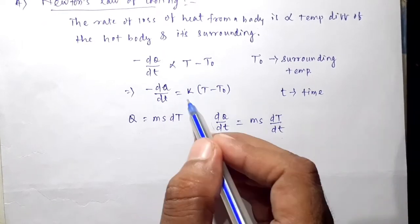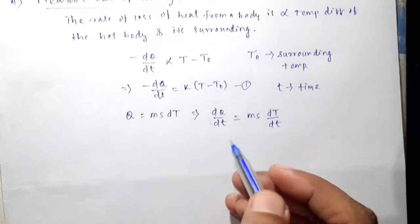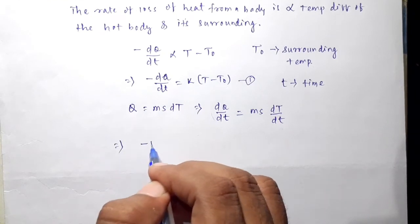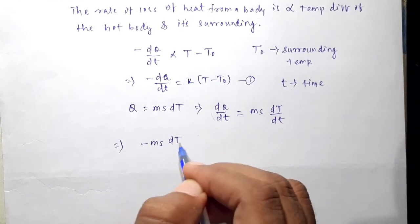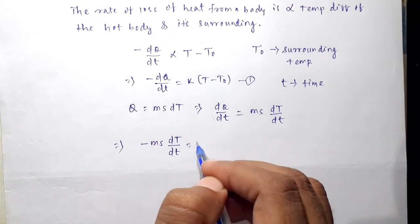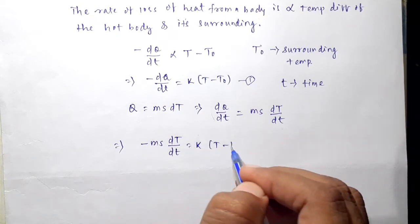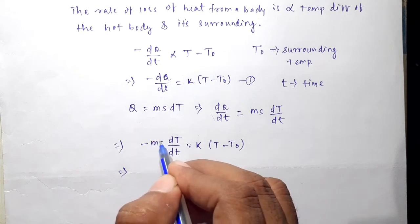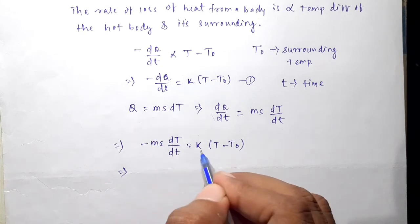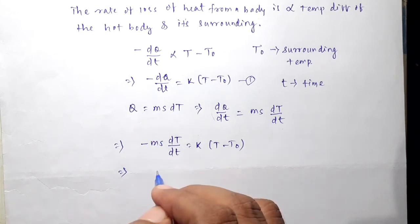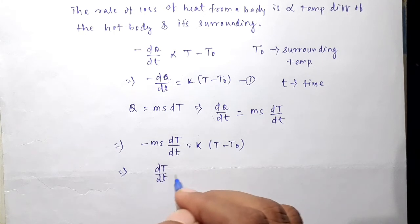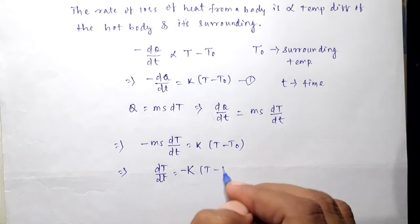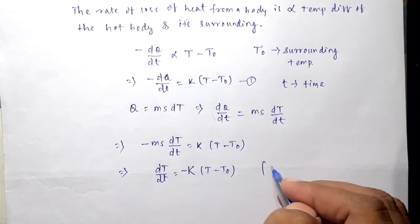So dQ/dt can be written as m·s·dT/dt, where m is mass and s is specific heat. Substituting this value of dQ/dt in the above equation, we get minus m·s·dT/dt equals k times T minus T0.